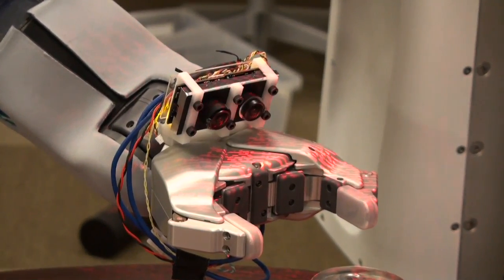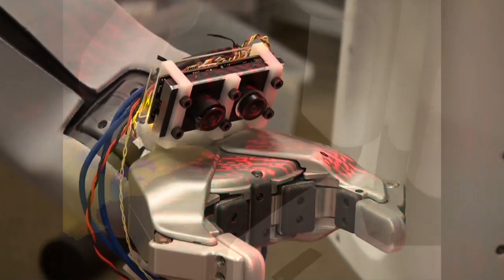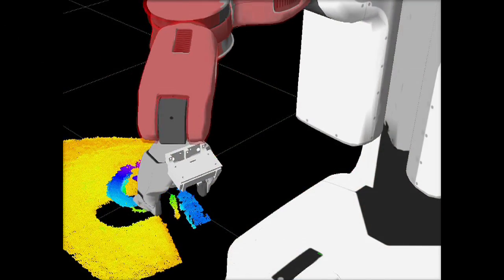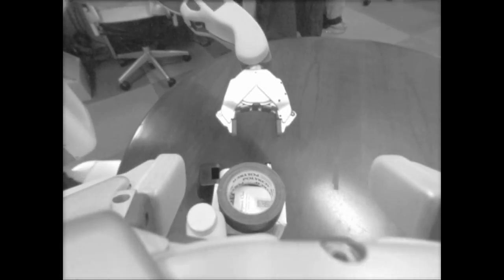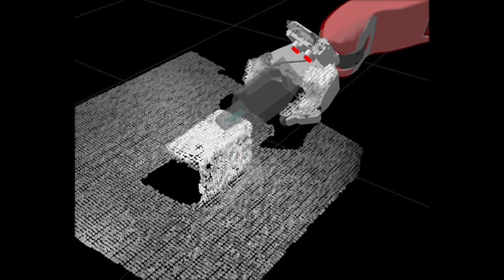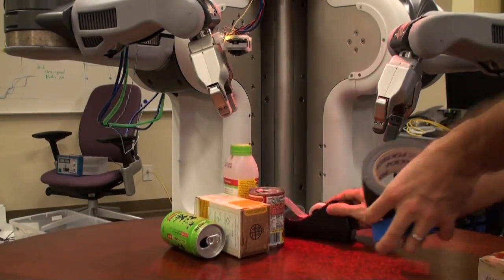We outfitted the PR2 gripper with a small stereo camera to provide 3D data from the viewpoint of the gripper. This viewpoint allows us to run a grasp adjustment algorithm that can improve a grasp as the gripper gets close to an object. It also deals better with cluttered scenes.